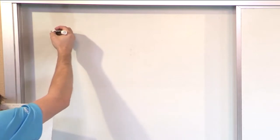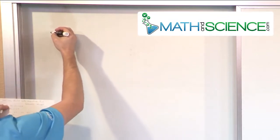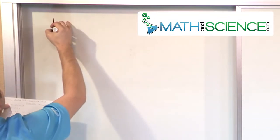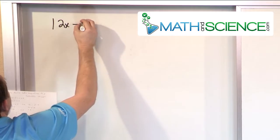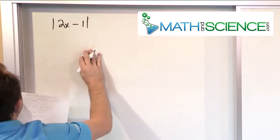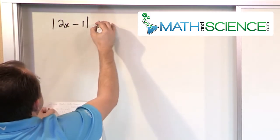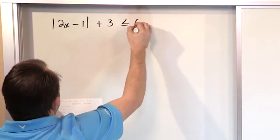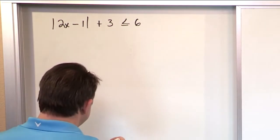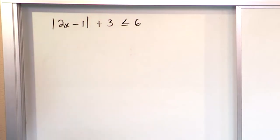For our first problem, what if we have the absolute value of 2x minus 1, closed absolute value, plus 3, less than or equal to 6?